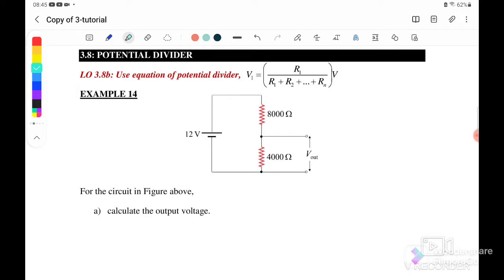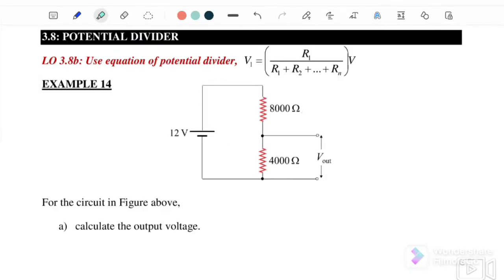Here we have a 12 volt battery connected in series with an 8,000 ohm resistor and a 4,000 ohm resistor. The first question asks us to calculate the output voltage, meaning we want to find what is the V here when it's connected to the 4,000 ohm. What is the potential difference across the 4,000 ohm?